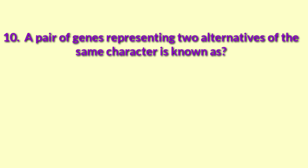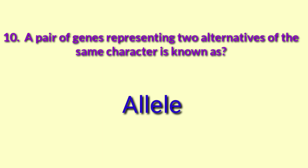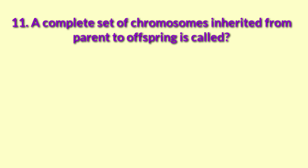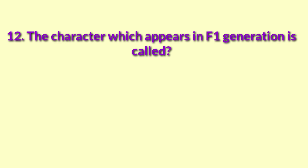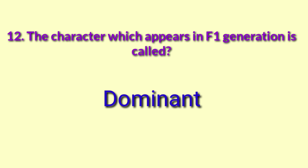A pair of genes representing two alternatives of the same character is known as an allele. A complete set of chromosomes inherited from parent to offspring is called a genome. The character which appears in the F1 generation is called dominant.